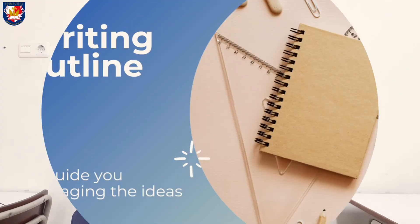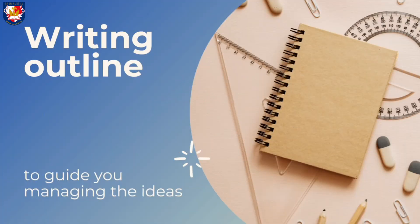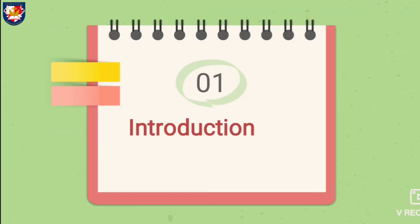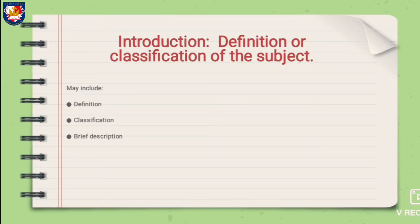After you find the information about the topic, let's take a look at the writing organiser. Information report text has three parts. Part 1 is introduction, usually found in paragraph 1. Introduction is the definition or classification of the subject. It may include: 1. Definition, 2. Classification, 3. General Description.